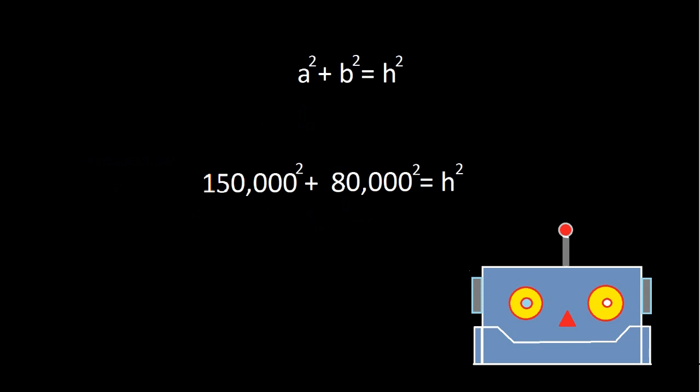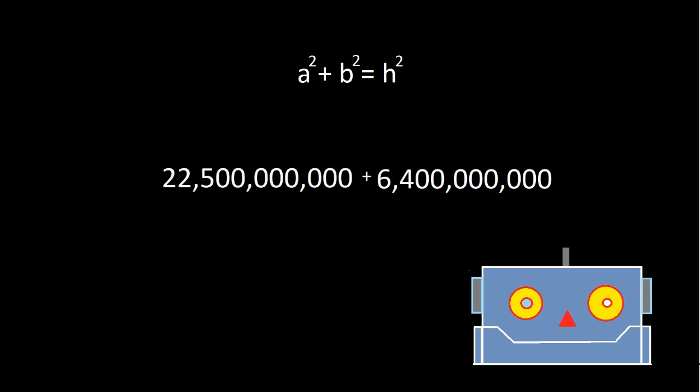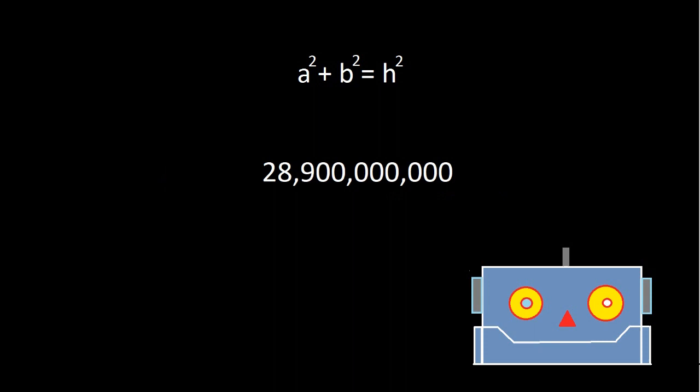To find out, you have to multiply each number by itself two times. It equals to 22,500,000,000 plus 6,400,000,000, which equals 28,900,000,000. Then you have to find the square root of 28,900,000,000 in h squared. The square root means the number that makes a quantity when it is multiplied by itself. So the square root of 28,900,000,000 is 170,000 because 170,000 times 170,000 equals 28,900,000,000. The square root of h squared is h because h times h equals h squared.